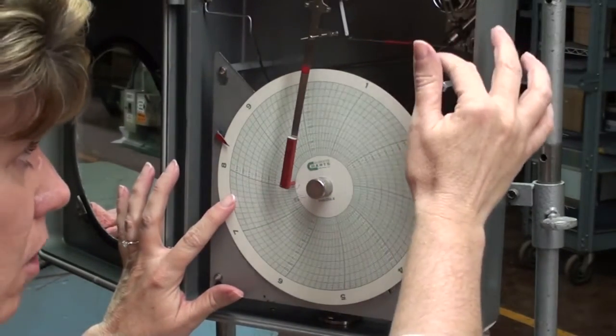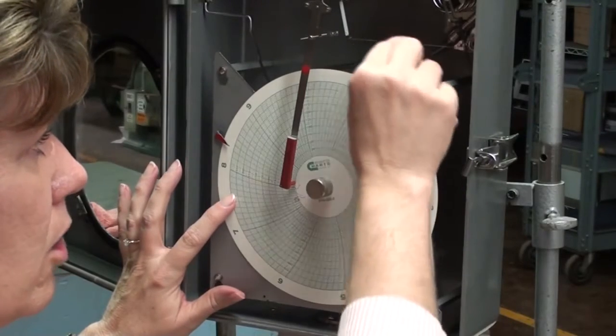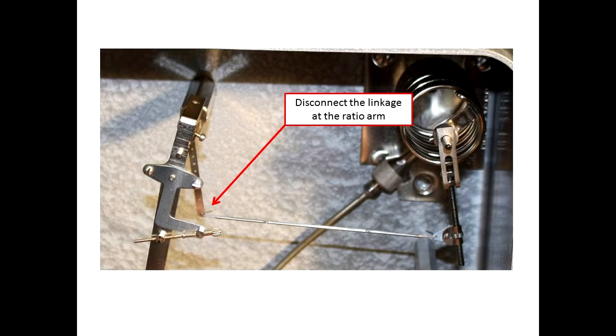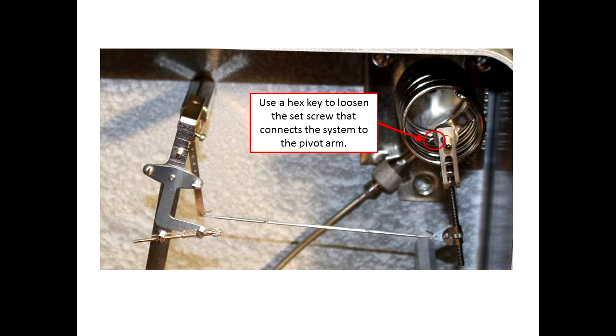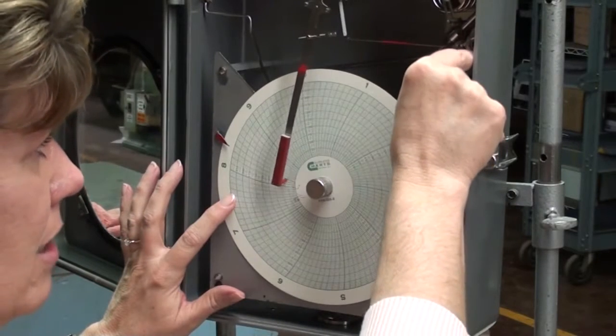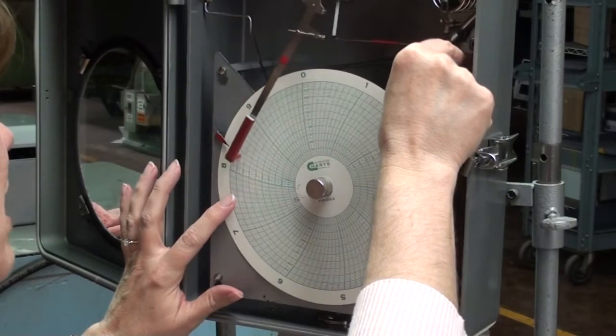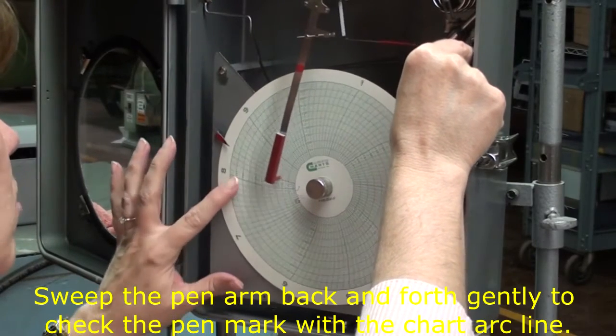And to check the arc line, you can do it two ways. You can take and disconnect your linkage here at the ratio arm, or you can loosen the set screw that attaches the adjust arm onto the pivot of the pressure system. Now, I've not tightened this yet, so mine is just a simple matter of swinging it back and forth.